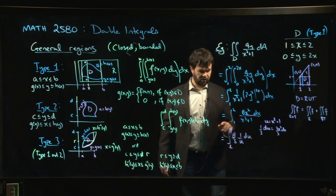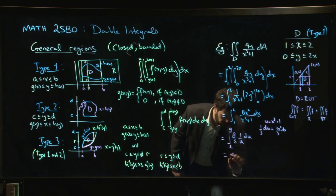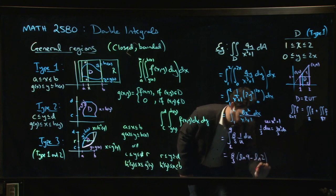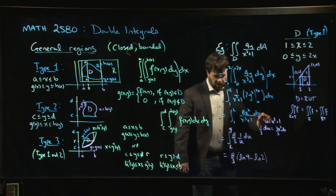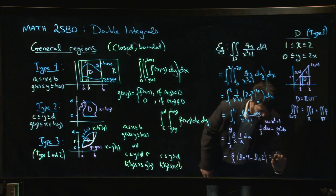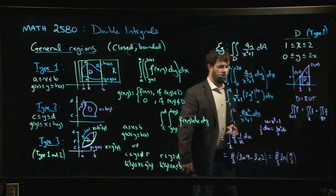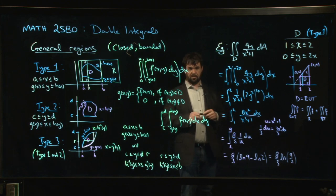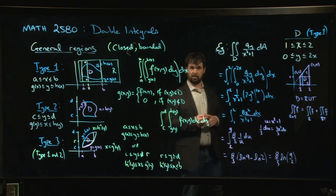I think everyone knows where to take it from here, but let's finish it off. 8/3 times the antiderivative of 1/u—that's the natural log of u. So we get 8/3 times (ln(9) - ln(2)). If you want to be fancy, maybe you do one more step and combine those into a single logarithm: 8/3 ln(9/2). We'll leave it at that. I think we'll do one more example like this before we move on to polar coordinates.